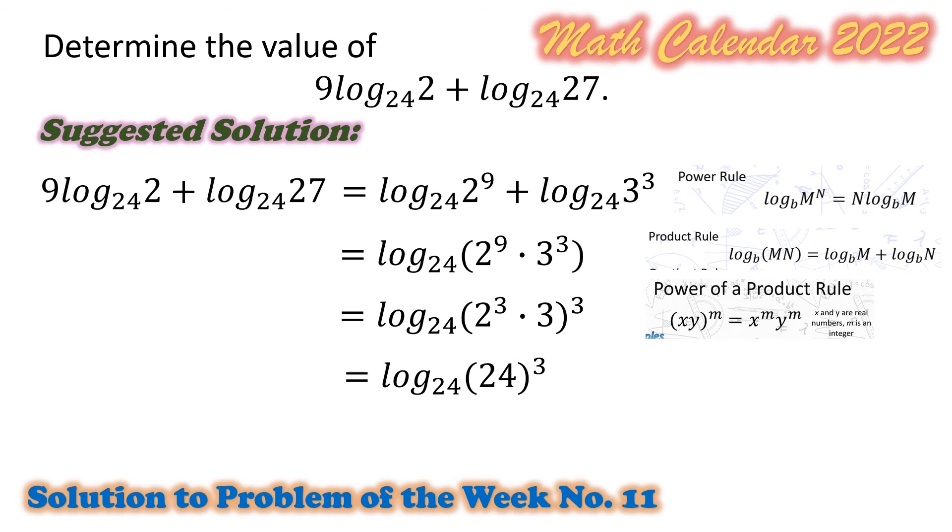Next, our final answer from the resulting expression is equal to 3. And in here, we use the inverse property of logarithm. That is, logarithm of b raised to x to the base b is equal to x. Hence, the final answer is 3.